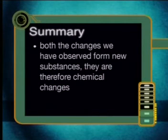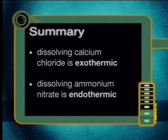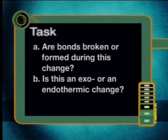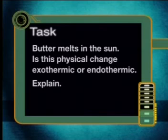Now to summarize. Both the changes we have observed form new substances, so the dissolving in water of calcium chloride and ammonium nitrate are both chemical changes. One of these chemical changes is exothermic and the other is endothermic. Do you think that one could also find exo- and endothermic physical changes? When an exhausted athlete sweats, water on her skin undergoes the following physical change: H₂O(l) becomes H₂O(g). Are bonds broken or formed during this change? Is this an exo- or an endothermic change? Butter melts in the sun — is this physical change exothermic or endothermic? Explain.